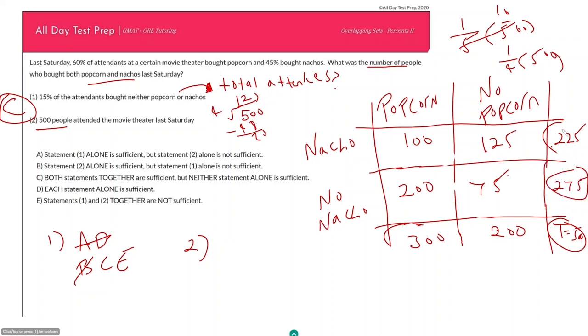225 over 500 is 45%, so that checks out, and there should be 275. So we didn't need to fill in all of this information to answer our question, but I say when you're reviewing and you have the time to do it, why not just practice your arithmetic skills.